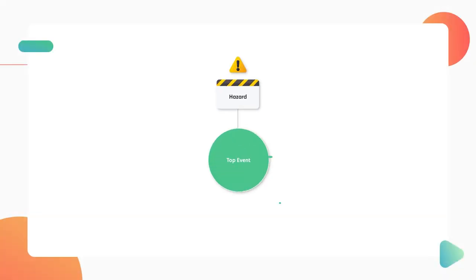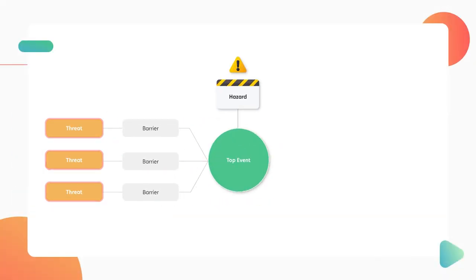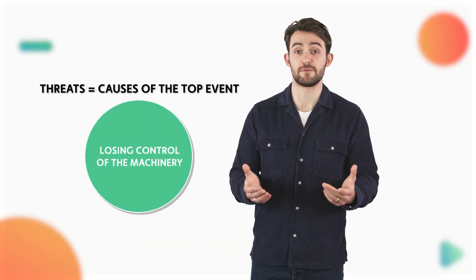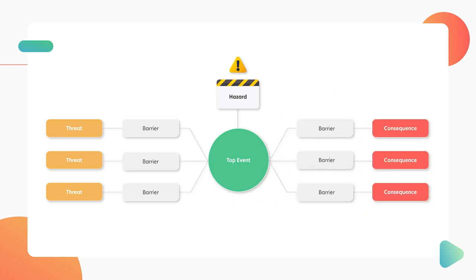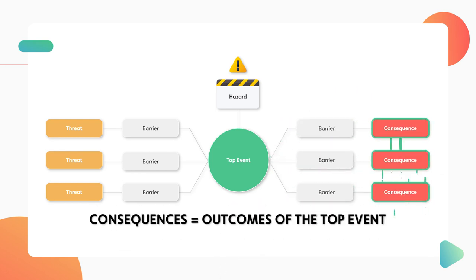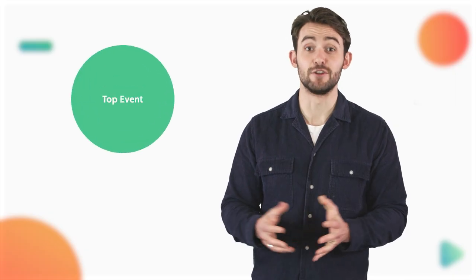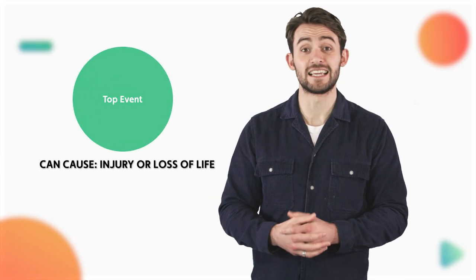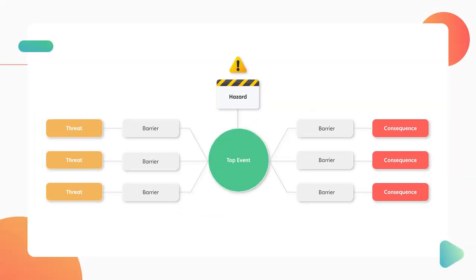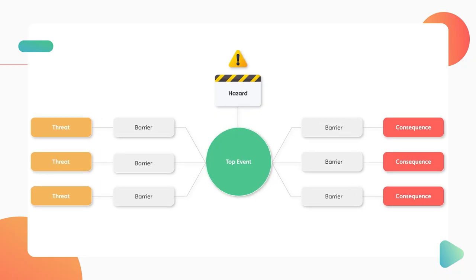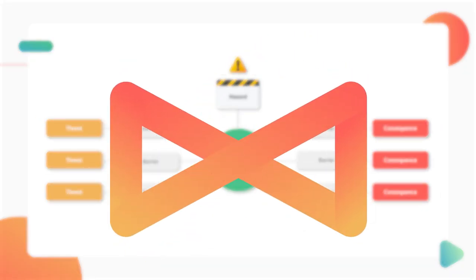On the left side, you have the threats — the things which lead to this top event. Why did the operator lose control of the heavy machinery, for example? And over on the right, you find the undesirable outcomes, or rather, the consequences of the top event taking place. If they lose control of the machinery, it could lead to injury or loss of life. And what brings your diagram together are the barriers. These are your safety nets, the things you put in place to stop the event from happening. Together, these elements create the shape of a bowtie, hence the name.